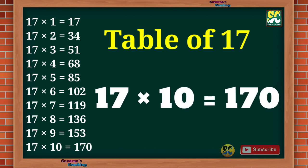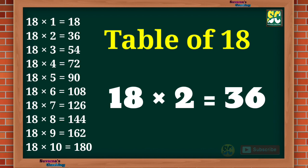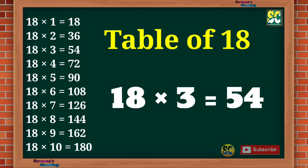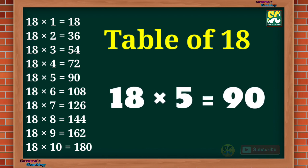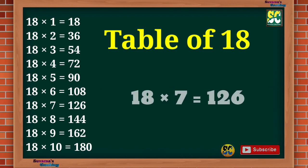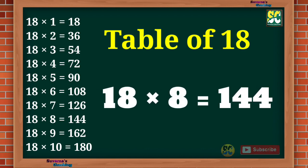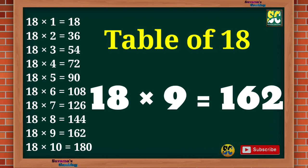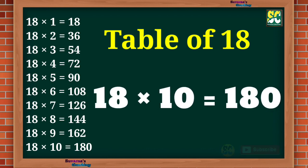17 10s are 170. Table of 18. 18 1s are 18, 18 2s are 36, 18 3s are 54, 18 4s are 72, 18 5s are 90, 18 6s are 108, 18 7s are 126, 18 8s are 144, 18 9s are 162, 18 10s are 180.